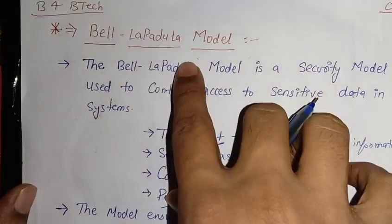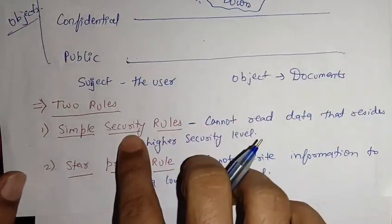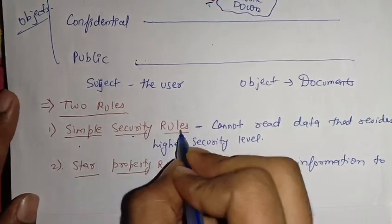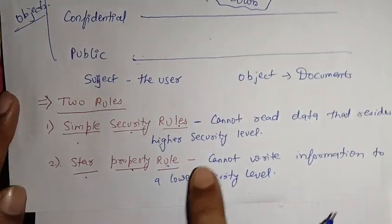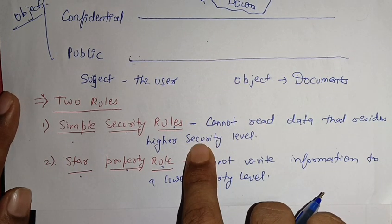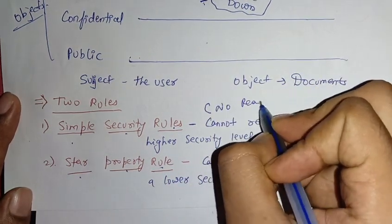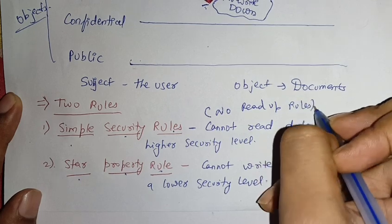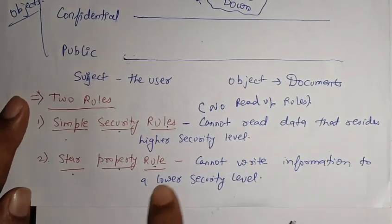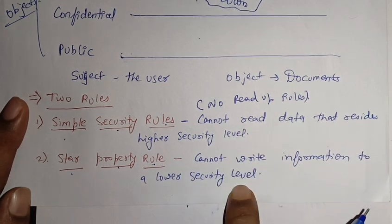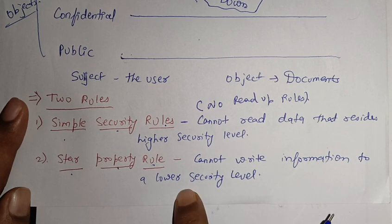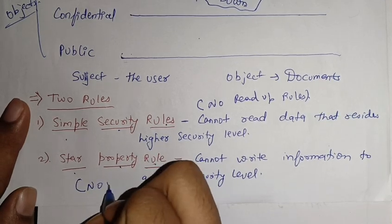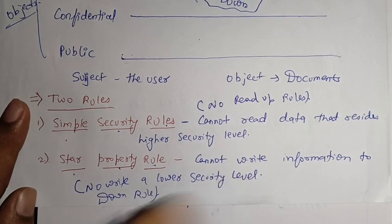The Bell-LaPadula model follows two formal rules. The first is the Simple Security Rule: a subject cannot read data that resides at a higher security level than their clearance — this is also called the no read up rule. The second is the Star Property Rule: a subject cannot write information to a lower security level — this is also called the no write down rule.